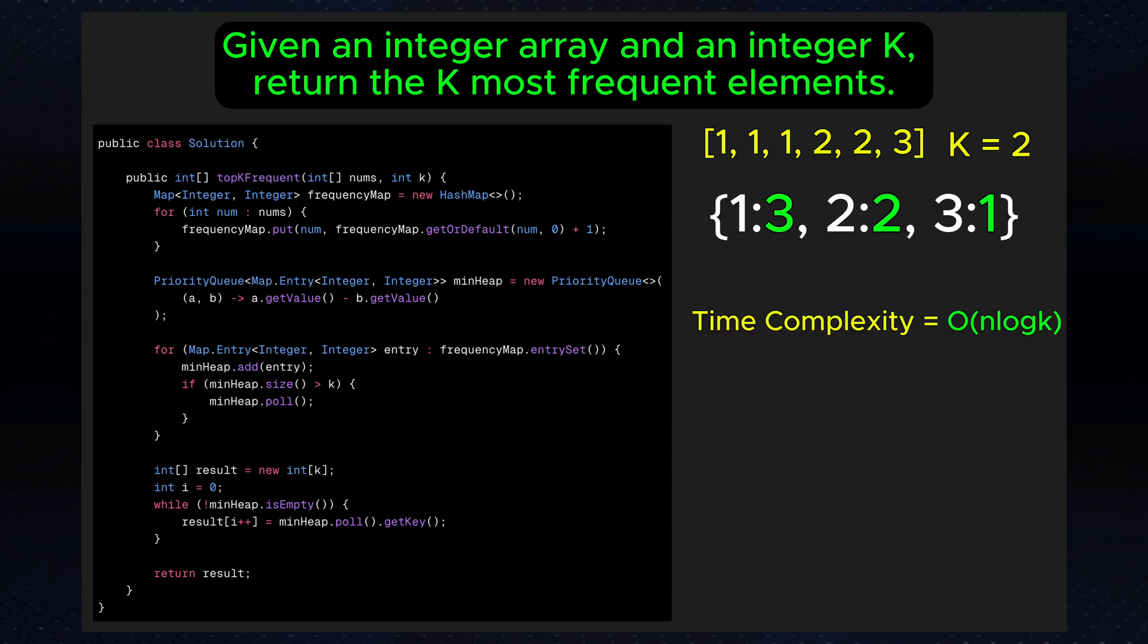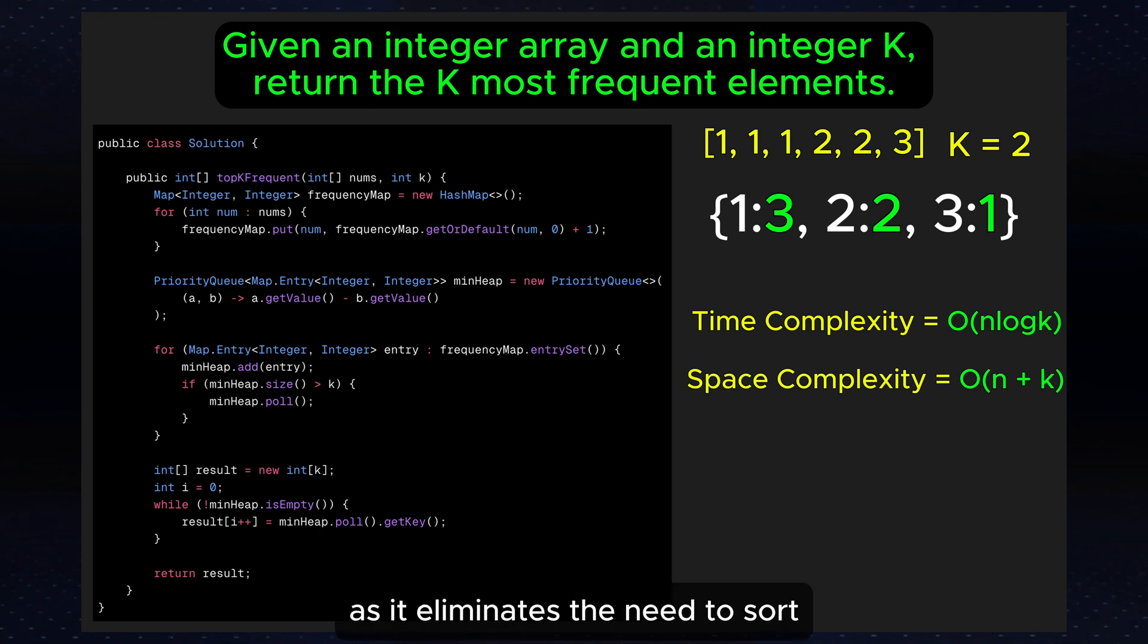The overall time complexity is O(n log k). As for space complexity, we need O(n) space to store the frequency map. We also need O(k) space for the heap. So the overall space complexity is O(n + k). This approach is highly efficient when k is small compared to n, as it eliminates the need to sort the entire list of frequencies.